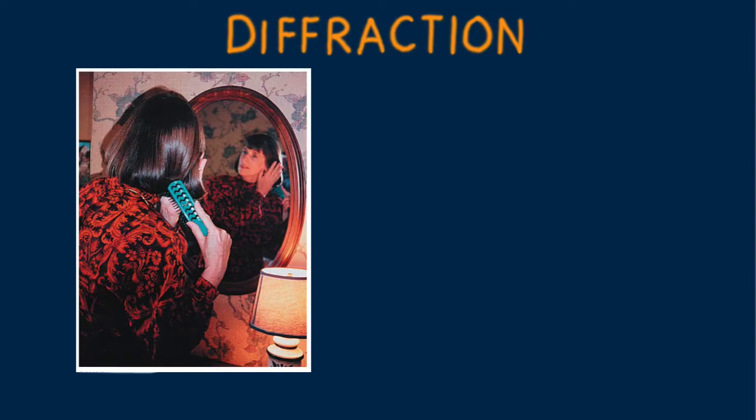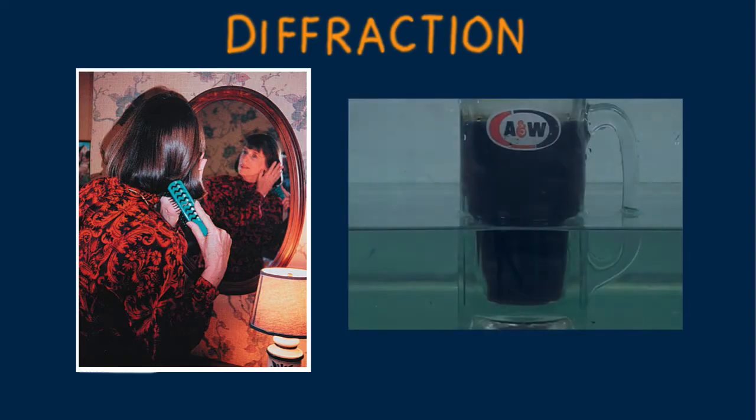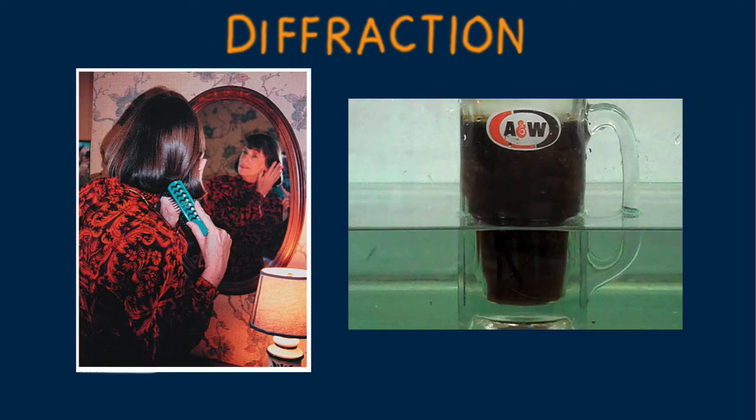We've already learned that light can be bent from its ordinary straight line path by reflection and by refraction. Now we learn another way in which light bends.